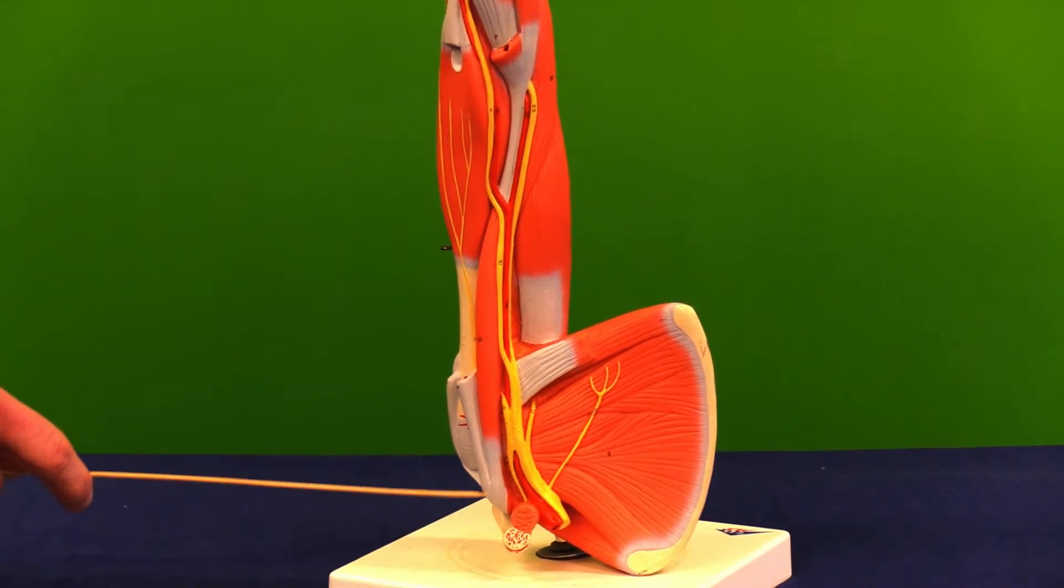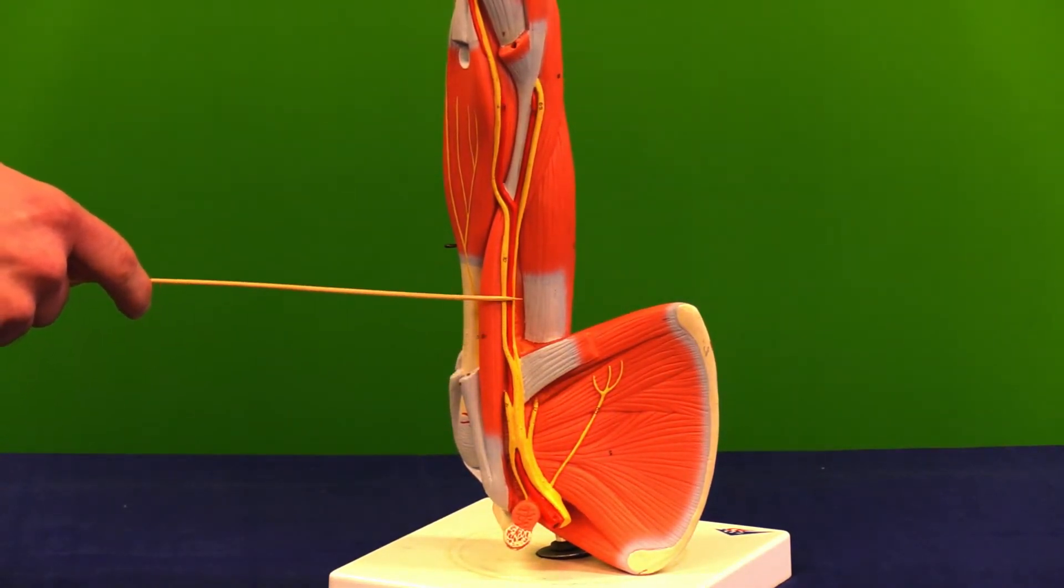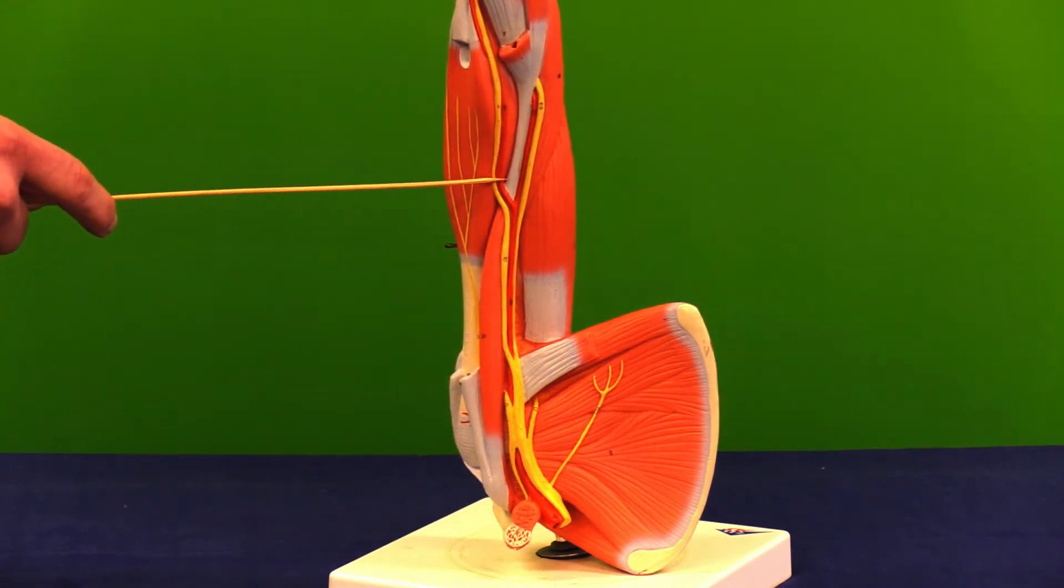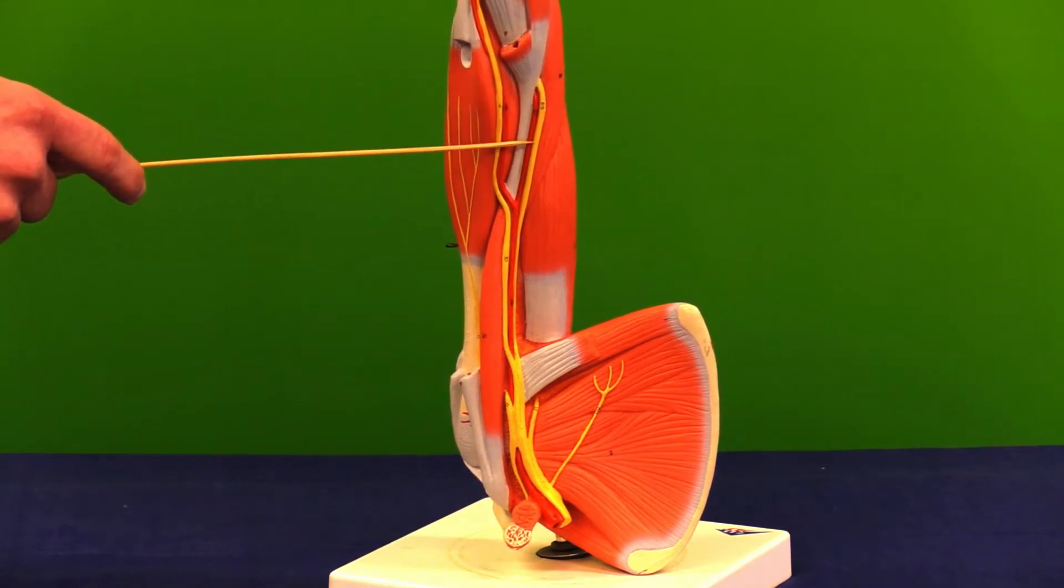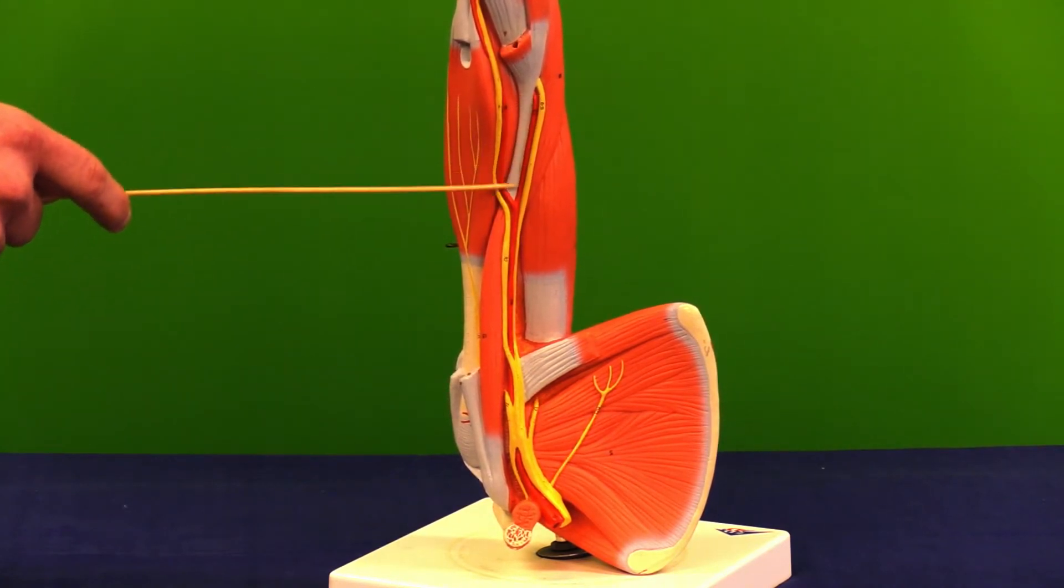Coming back to this anterior view, our brachial artery is going to split into the radial artery, which will head towards the thumb side of the hand, and the superior collateral ulnar artery, which will head towards the little finger side of the hand.